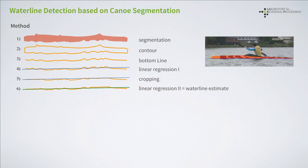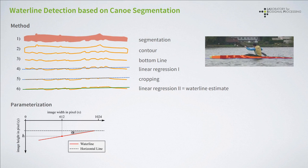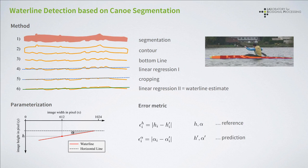Given that, the question is how to evaluate the predicted waterlines. This requires a suitable parameterization, an error metric, and most importantly, a ground truth reference. The parameterization that we introduced consists of a height parameter denoted with h, and a rotation parameter denoted with alpha. The error metric consists of a deviation of a prediction from a given reference, to which h' and alpha' refer.